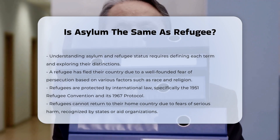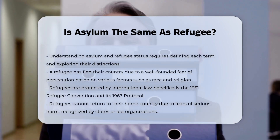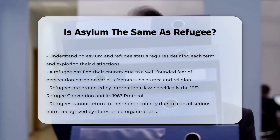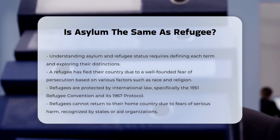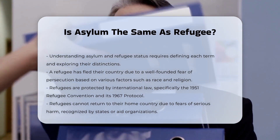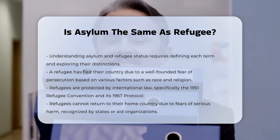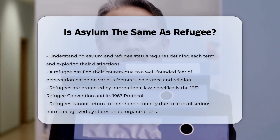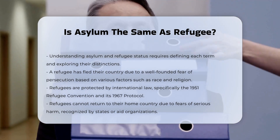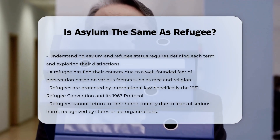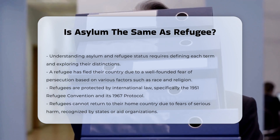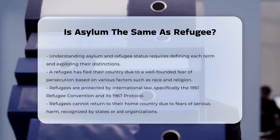Definition of a refugee. A refugee is an individual who has fled their country due to a well-founded fear of persecution based on race, religion, nationality, membership in a particular social group, or political opinion. Refugees are protected by international law, specifically the 1951 Refugee Convention and its 1967 Protocol. They are unable or unwilling to return to their home country because they fear serious harm, and their situation is recognized by states or aid organizations.